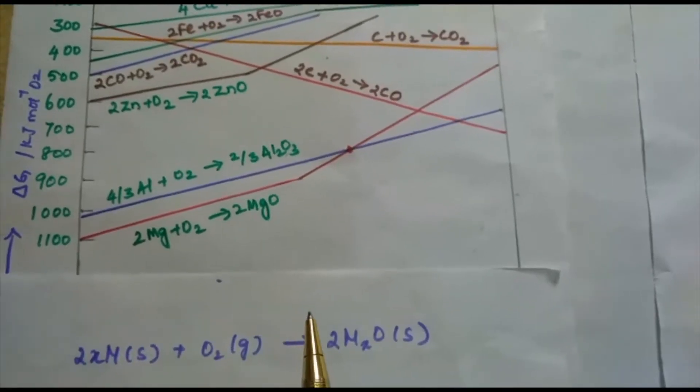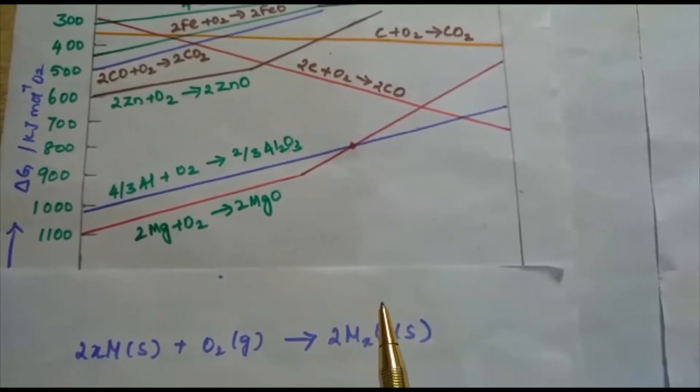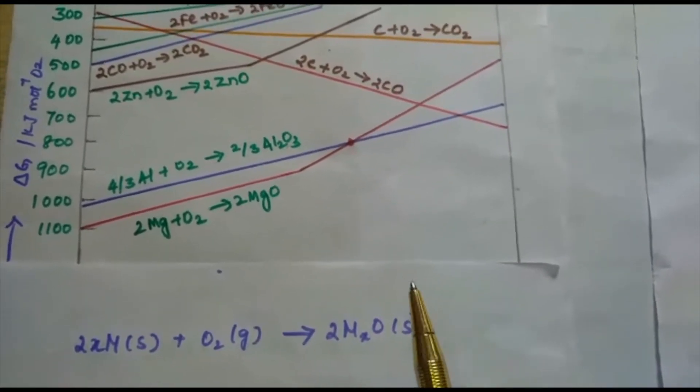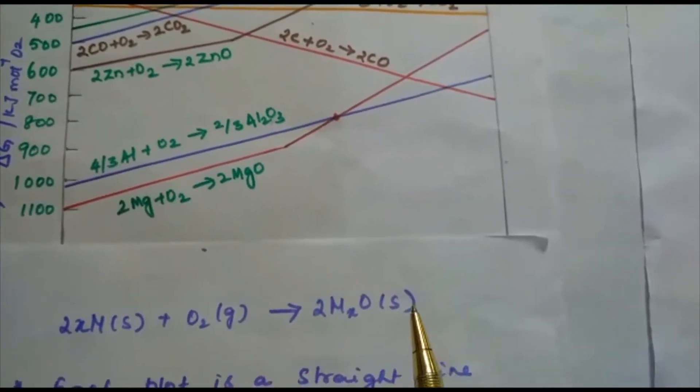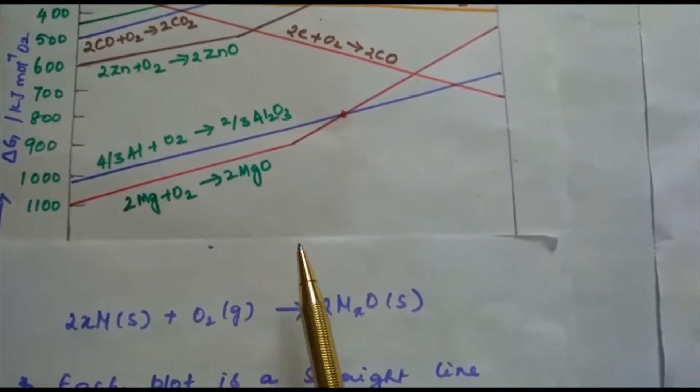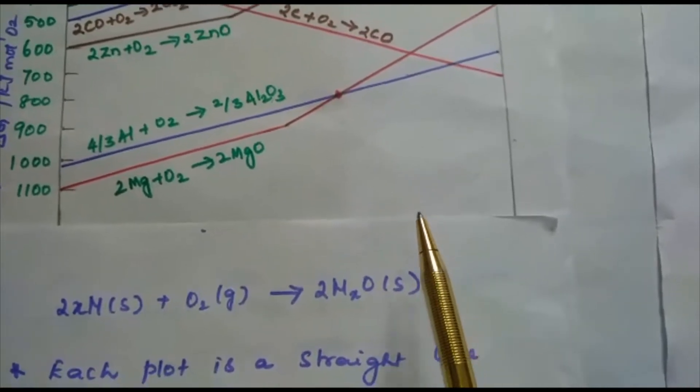In this reaction, the gaseous amount, that is molecular randomness, is decreasing from left to right due to the consumption of gases leading to a negative value of delta S.